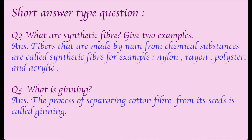Question two: What are synthetic fibers? Give two examples. Fibers that are made by man from chemical substances are called synthetic fibers. For example: nylon, rayon, polyester, and acrylic. Question three: What is ginning? The process of separating cotton fiber from its seed is called ginning.